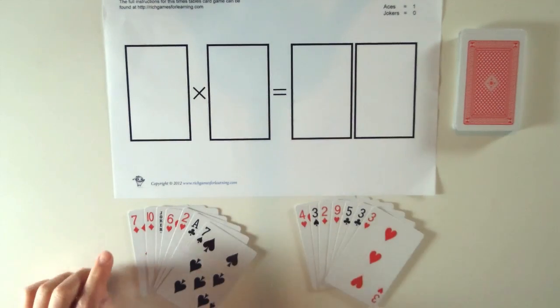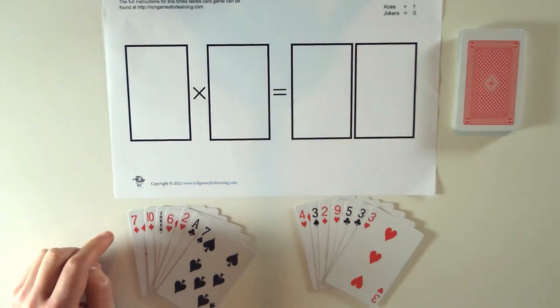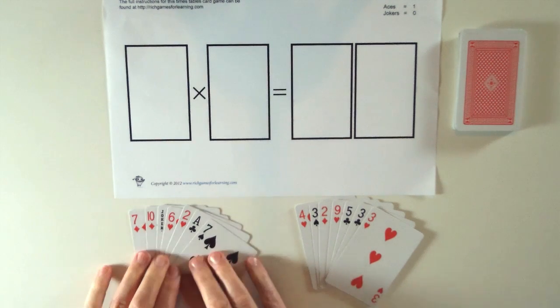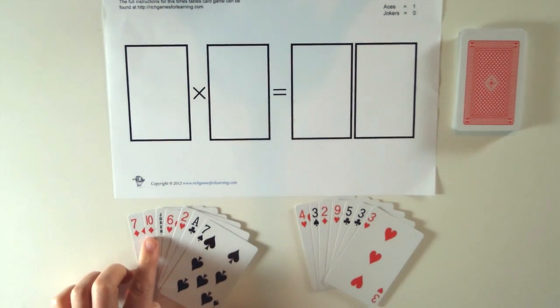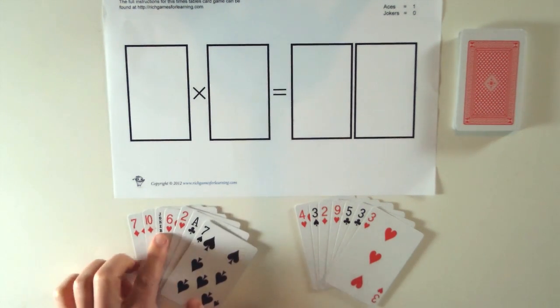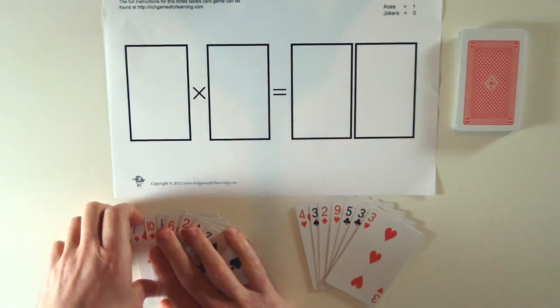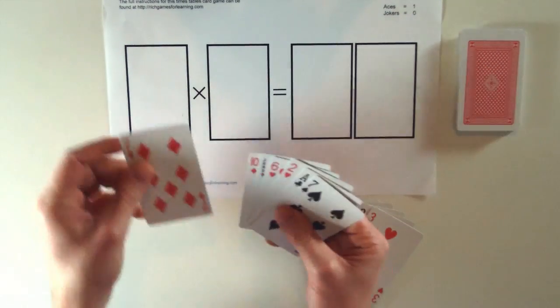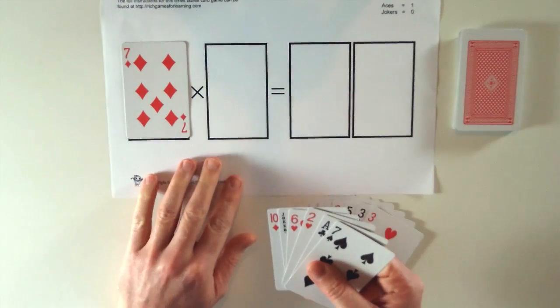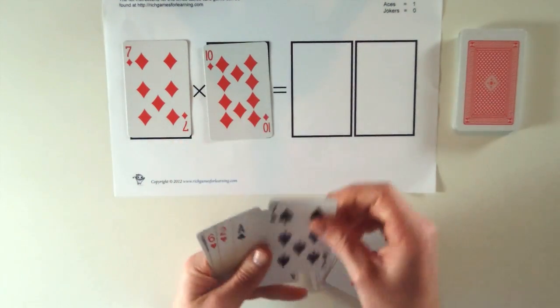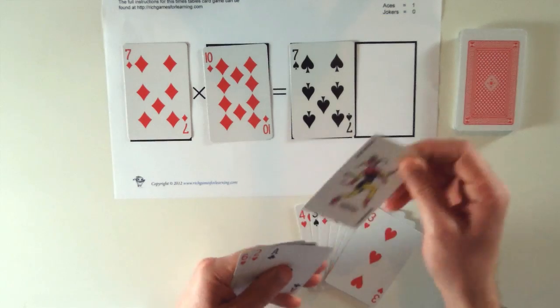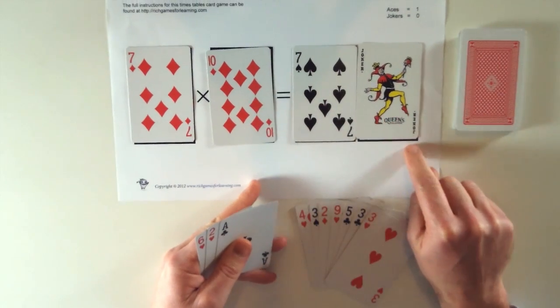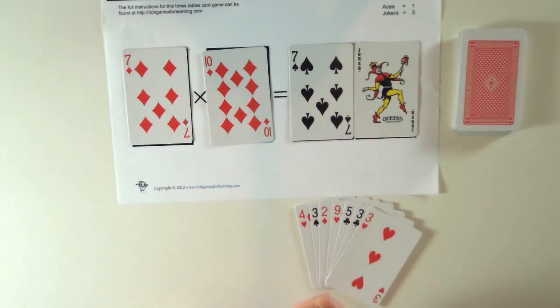Now the player that goes first is the player who can make a complete times table sum. Now I've had a look. This player can do seven times ten equals seventy. So this player would pick up their cards and go seven times ten equals seventy. And joker is zero. Alright, so seven zero, seventy.